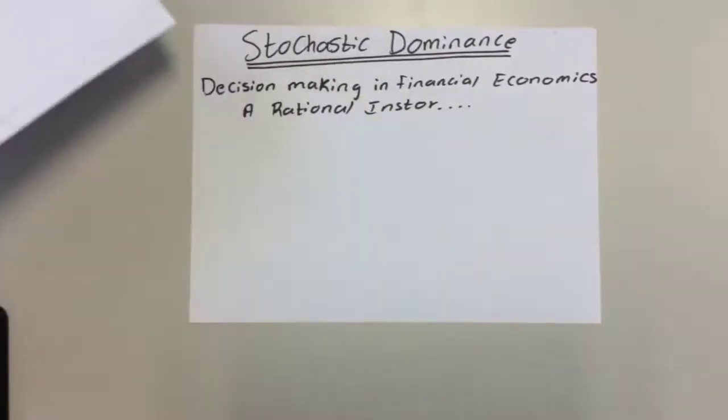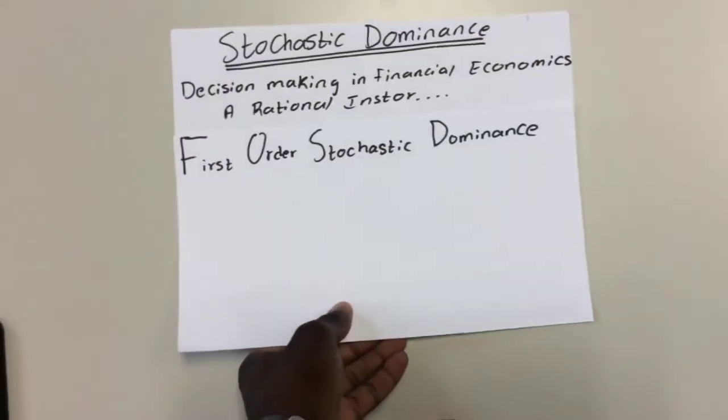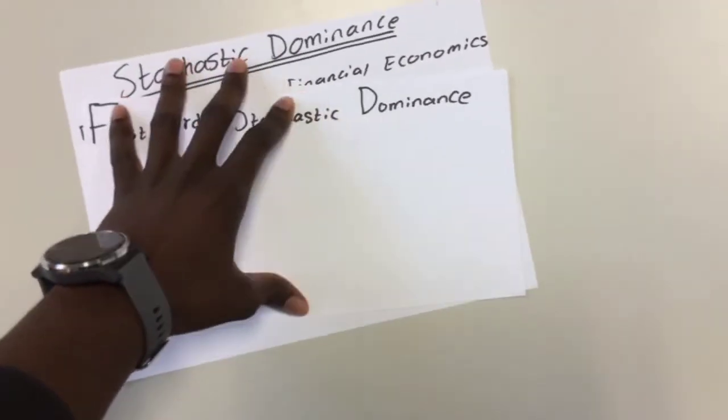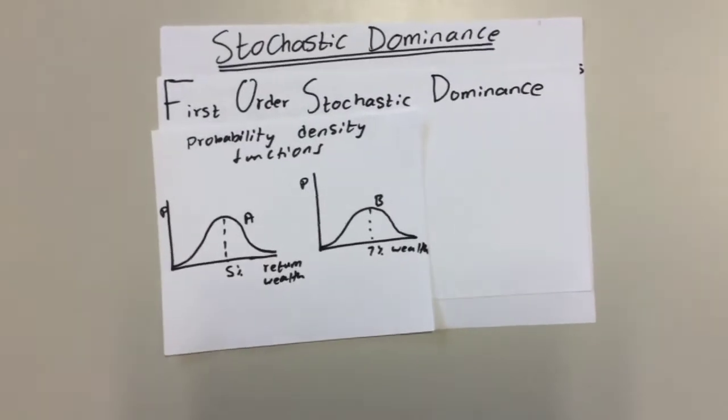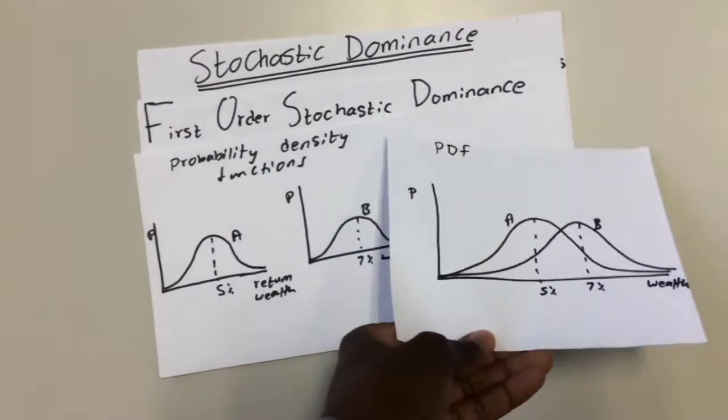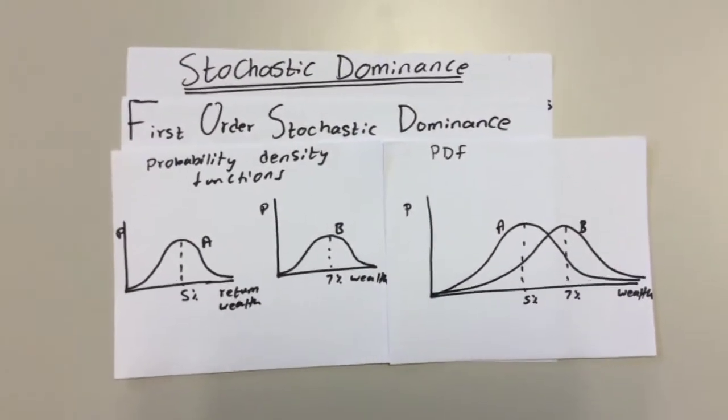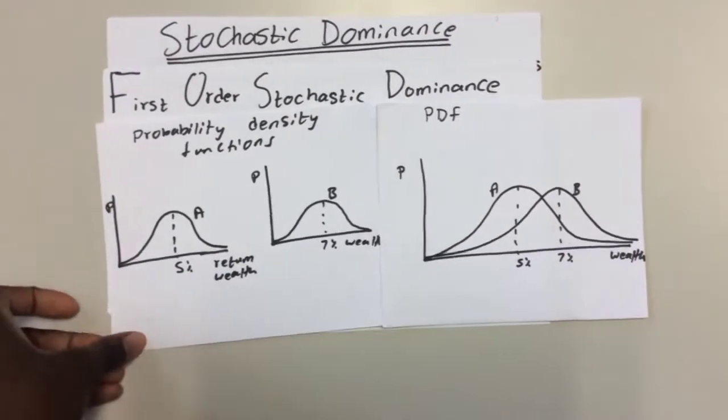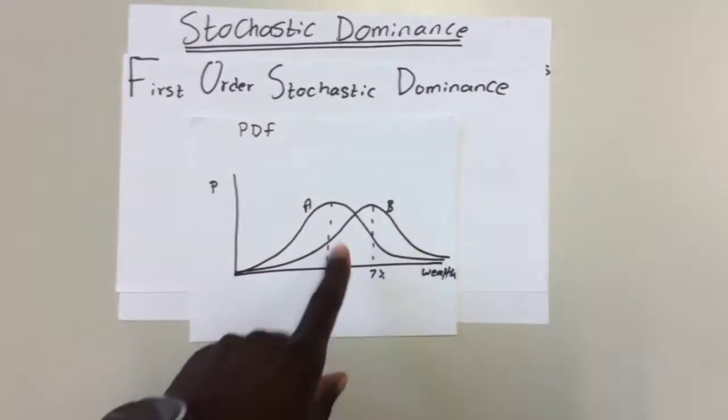Now let us look at using stochastic dominance to make this decision. Say you have two investment opportunities where you will have to choose only one of the two, investment A and B. Suppose that these two investments A and B have equal variances. As you can see by the two graphs, A has 5% mean and B has 7% mean. By looking at these two probability density functions, it's clear that you will choose B over A.